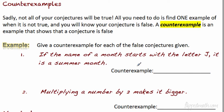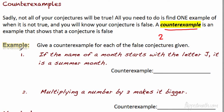Now onto counter examples. Sadly, not all your conjectures are going to be true. You're going to make a guess and be wrong. How do you prove a conjecture is not true? You need to find a counter example — one example that shows your conjecture is false, the case where it doesn't work. For example, 'all prime numbers are odd' — that's a good conjecture, but it's not true. The counter example is the number 2: it's prime but not odd.